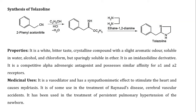Next is the synthesis of tolazoline. Tolazoline can be synthesized by the reaction of phenylacetonitrile treated with ethanol and hydrochloric acid, resulting in the synthesis of ethyl phenylacetimidate. Further, this intermediate is treated with ethylenediamine, resulting in the synthesis of tolazoline. This is the general reaction for the synthesis of tolazoline.